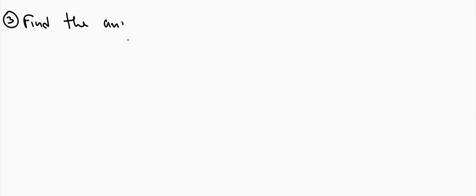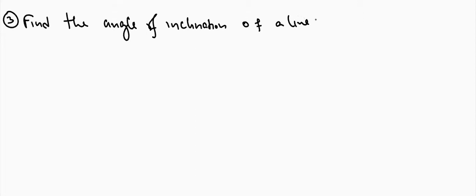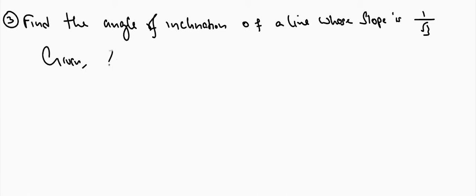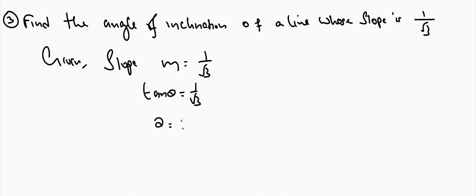Find the angle of inclination of a line whose slope is 1 by root 3. Given slope m equals 1 by root 3. We know that slope equals tan theta, so tan theta equals 1 by root 3. Therefore, the angle of inclination theta is equal to 30 degrees.